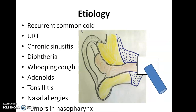These are the list of infective conditions in which middle ear infection can happen: upper respiratory tract infection, common cold, sinusitis, diphtheria, whooping cough, adenoids, tonsillitis, nasal allergy, and tumors of the nasopharynx. The majority of the time, infection comes from the nasopharynx.